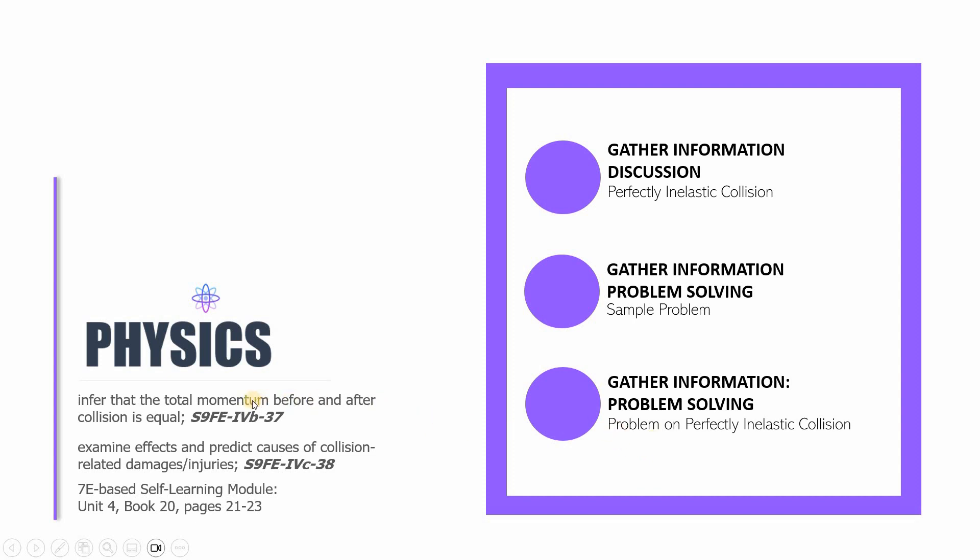The learning competencies that we have for this video lesson are the following: you have to be capable of inferring that the total momentum before and after the collision must be conserved. If not, there must be something wrong like a massive transformation of energy from one form to another.